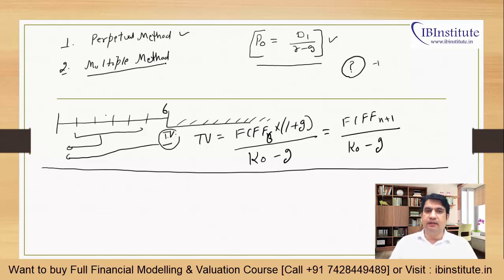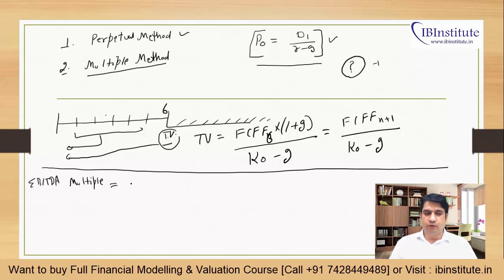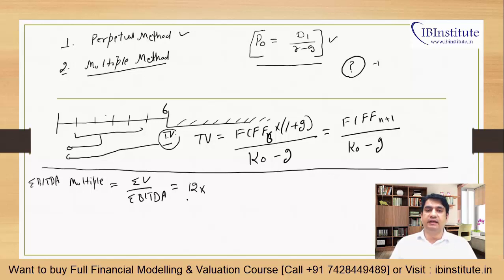The second method is the multiple method. In this method, we assume a multiple. There are many multiples possible — it depends on which industry and which company level you are working on. For example, if you take an EBITDA multiple, it is defined as enterprise value divided by EBITDA. We assume the EBITDA multiple will be 12X — it could be 10X, 8X, 5X, or anything. 12X means 12 times EBITDA, so the enterprise value is 12 times the EBITDA.